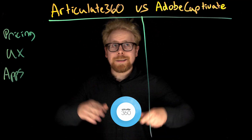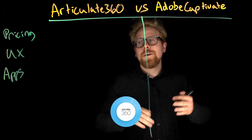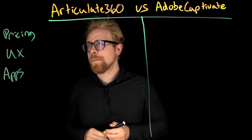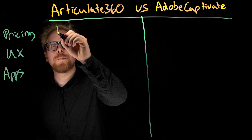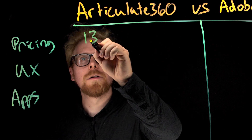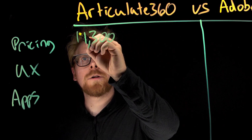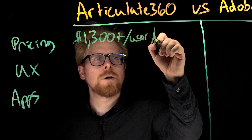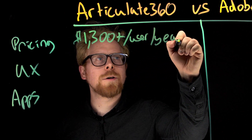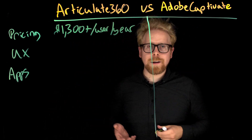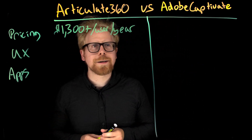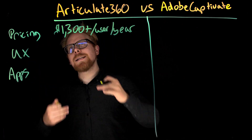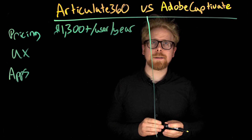Articulate 360 is the bigger of the two. First of all, it is going to be priced higher — it's about $1,300 plus per user per year. Now if you're an education professional, you're going to get a discount. If you're a student, I think you get a discount as well. So that is the pricing for Articulate 360.